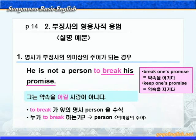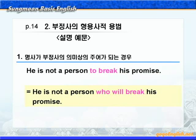누가 to break 합니까? to break의 수식을 받는 명사 'person'이 to부정사의 의미상의 주어 역할을 하고 있는 것입니다. 이 문장도 관계대명사를 써서 바꿀 수 있죠. 'He is not a person who will break his promise.' 그는 그의 약속을 어길 사람이 아니다. 해석은 똑같이 됩니다.